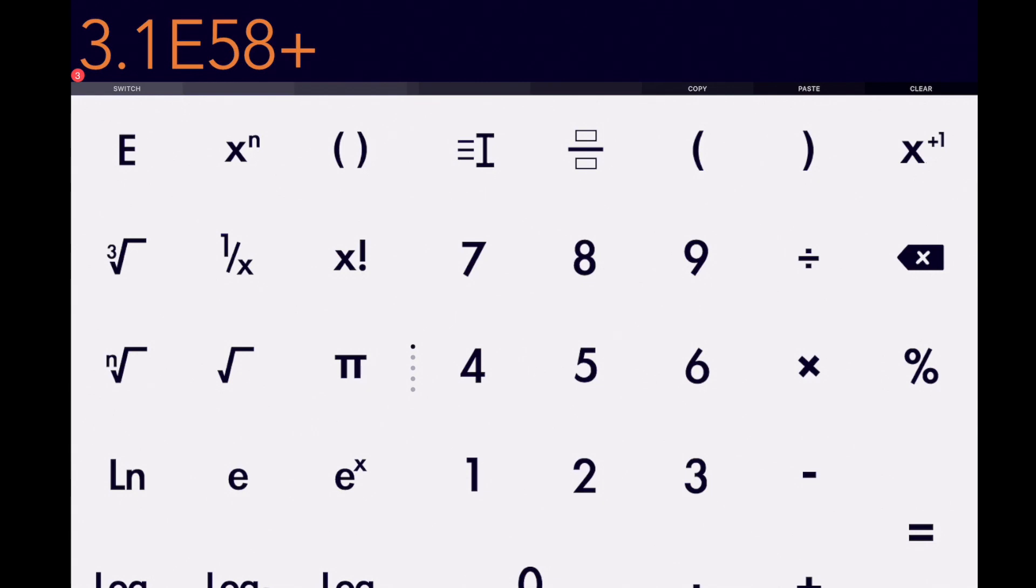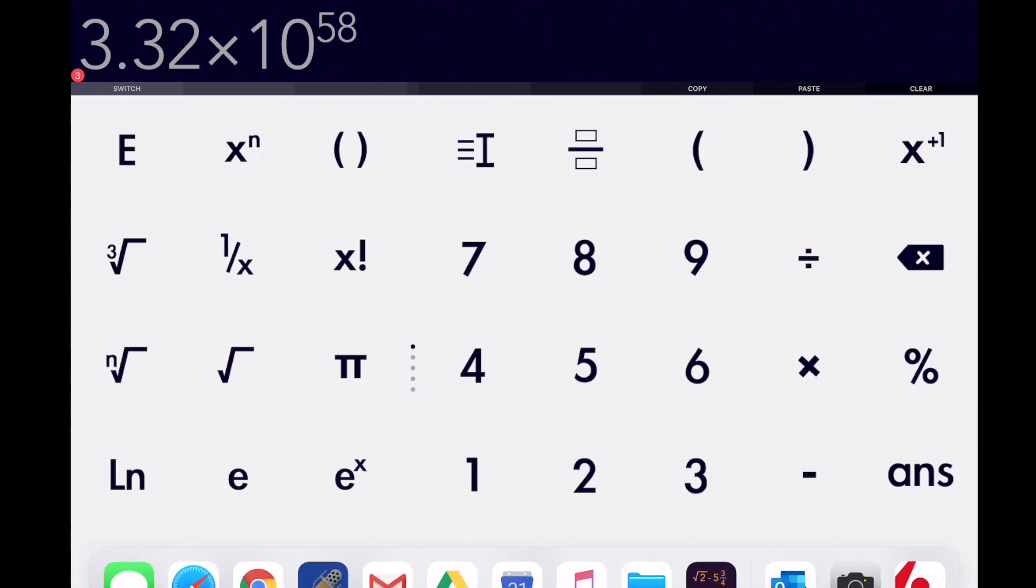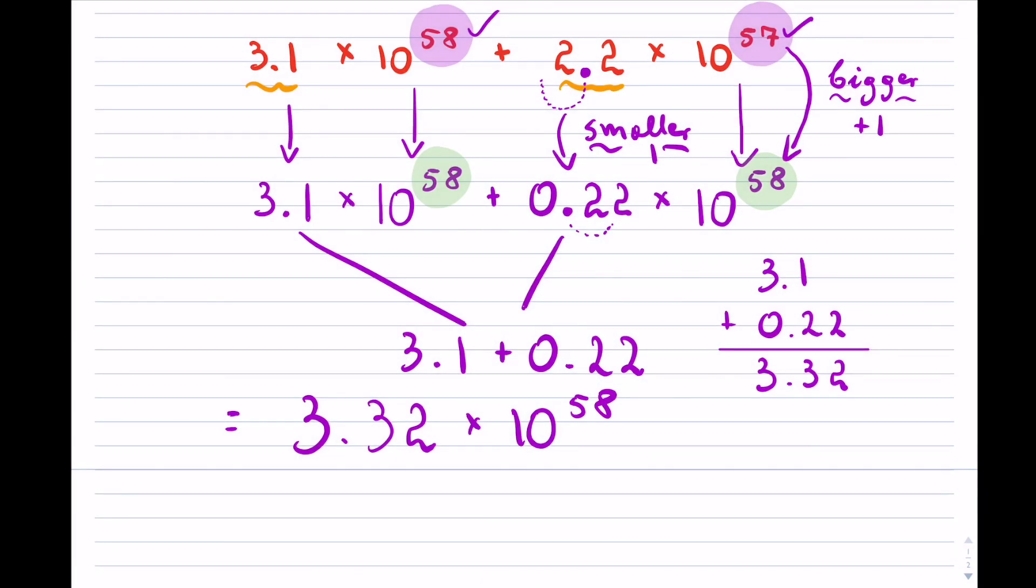Plus, and then it was 2.2 times 10 to the power of 57, and notice it gives you the same thing. That's for those who have a calculator that has a capital E or sometimes double capital E, and you can ask your teachers for that. Coming back to our questions...